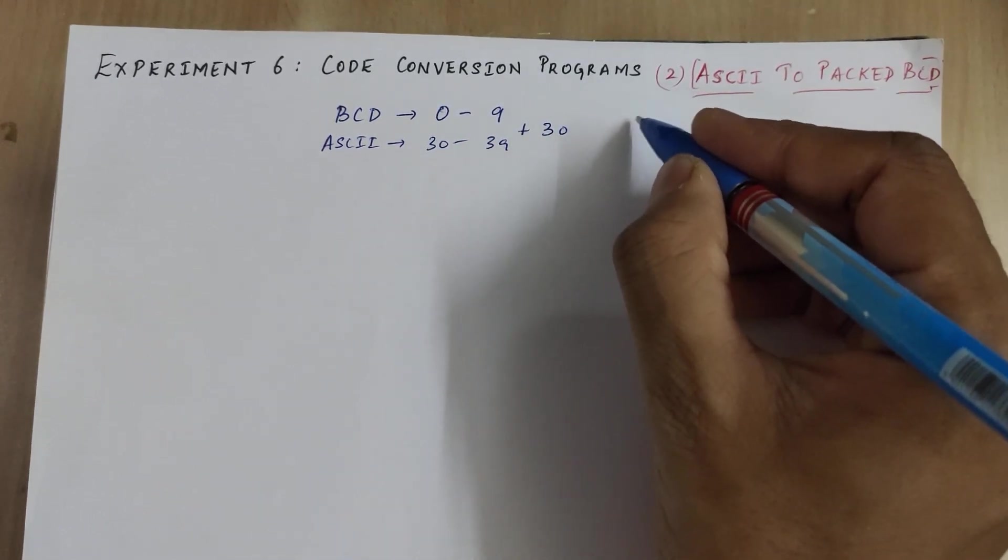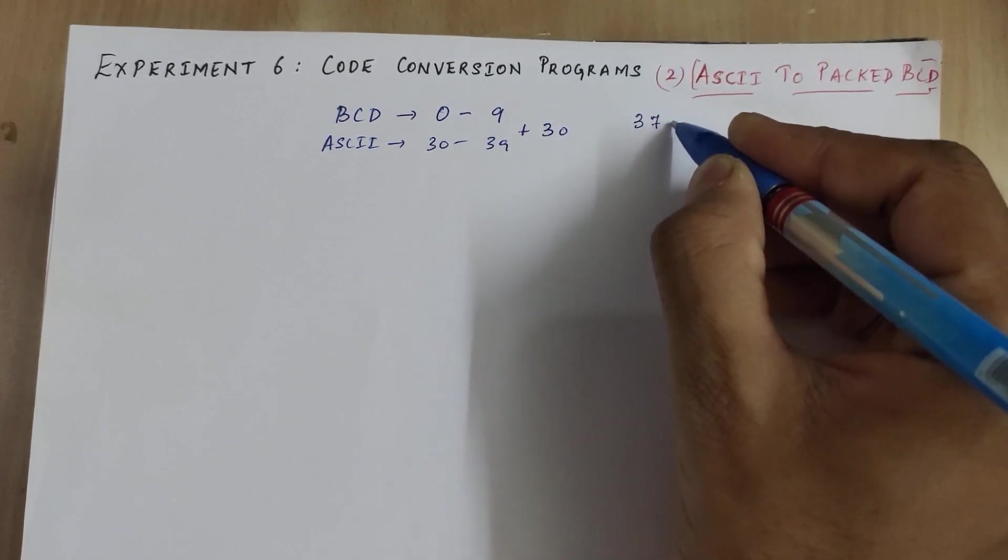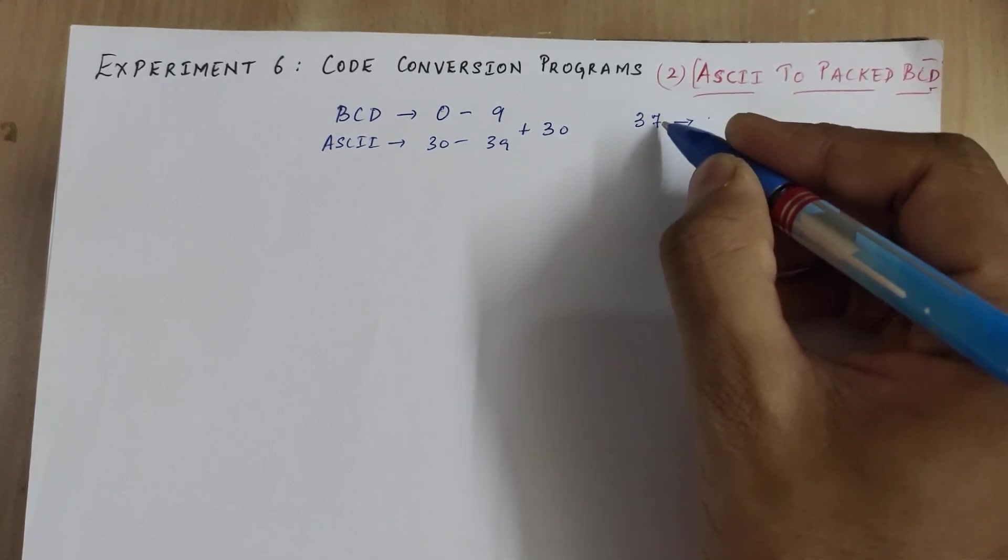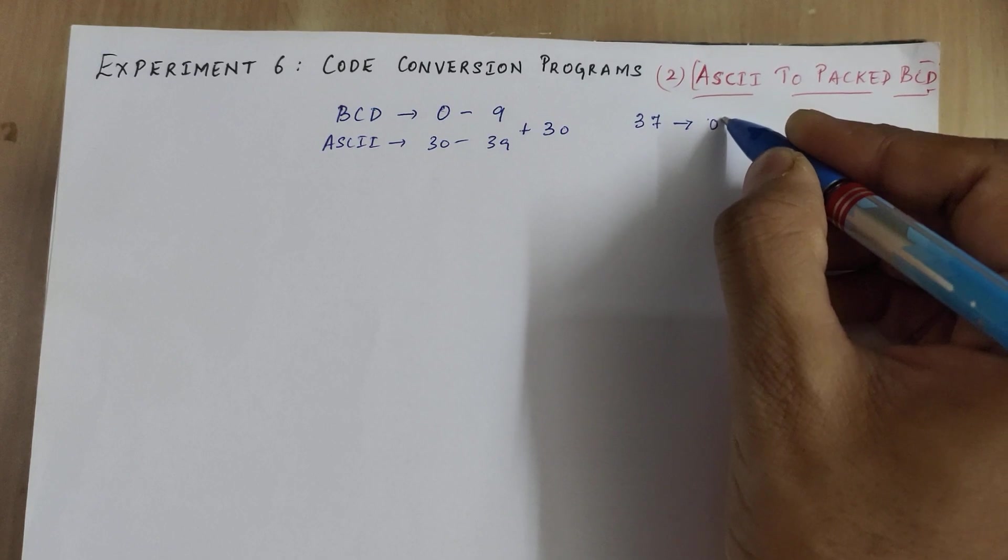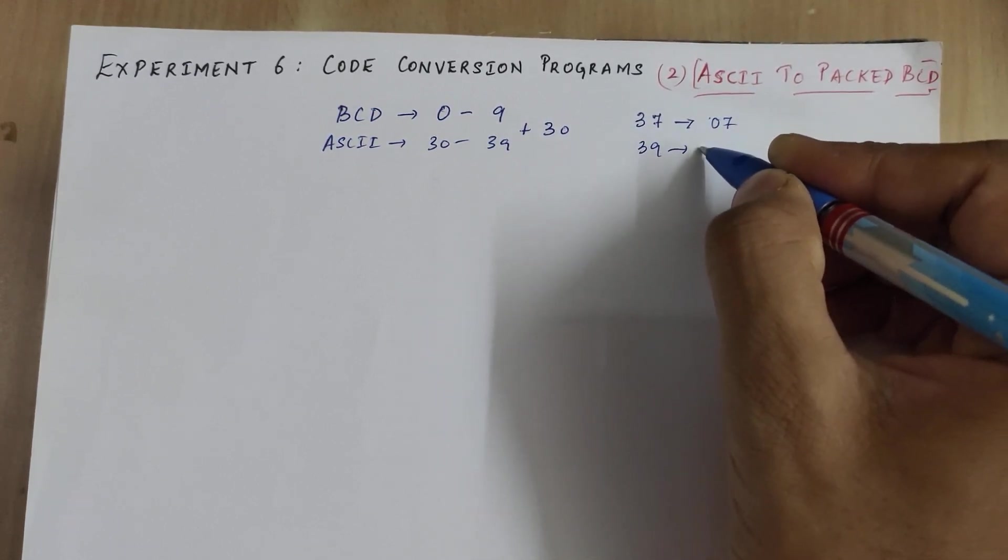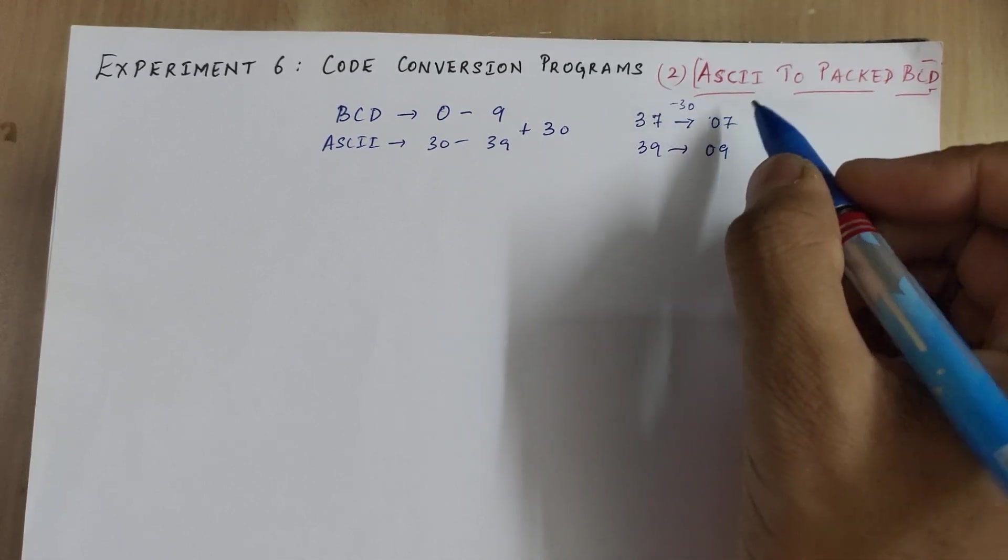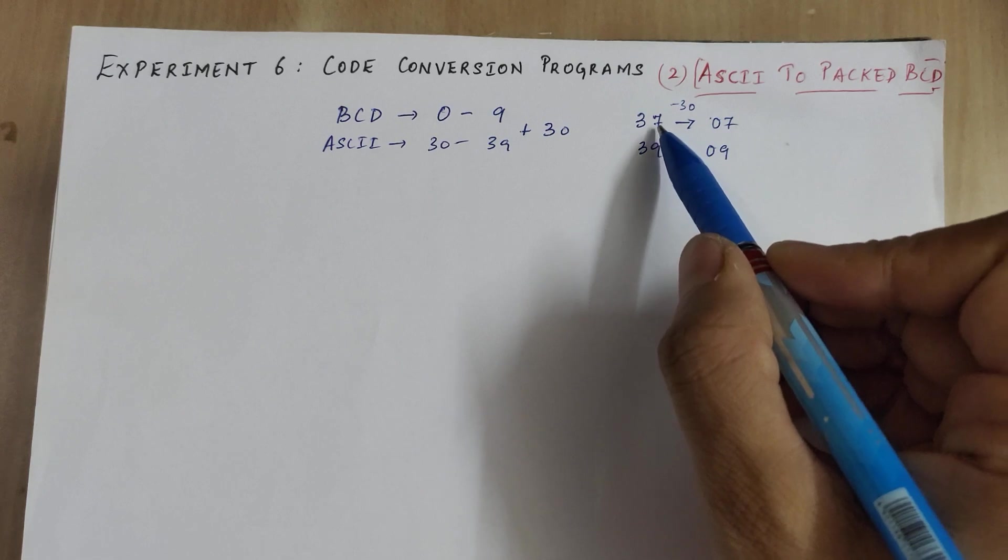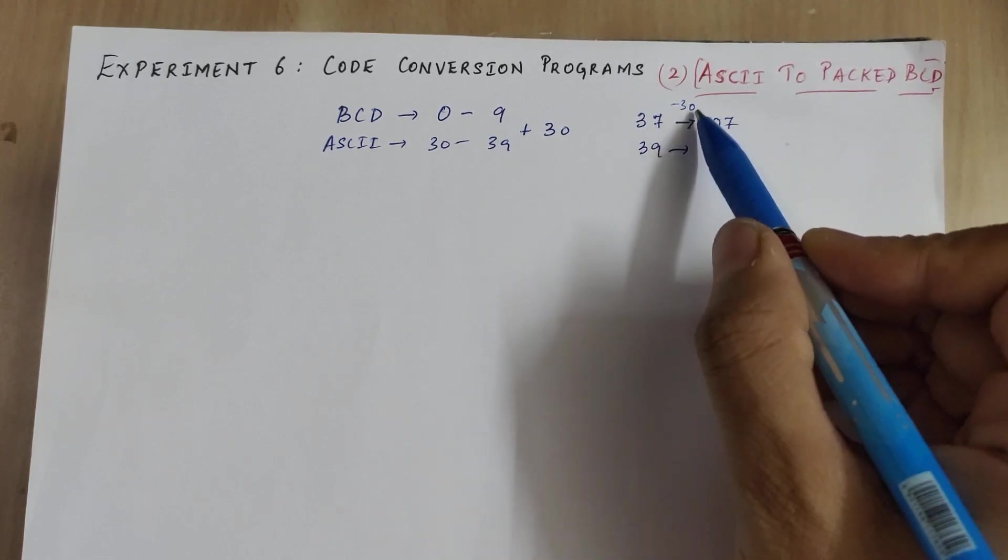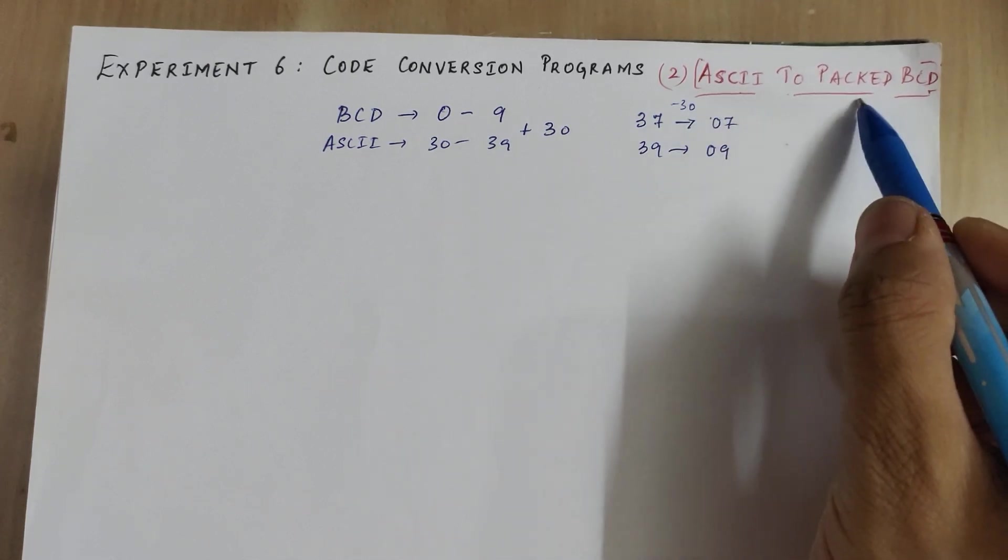Now if we give the ASCII number, say for example 37, the program should give us the BCD digit back. So ASCII 37 is the ASCII of 7. This program is not just a single ASCII digit into a single BCD digit, but it's an ASCII to packed BCD.